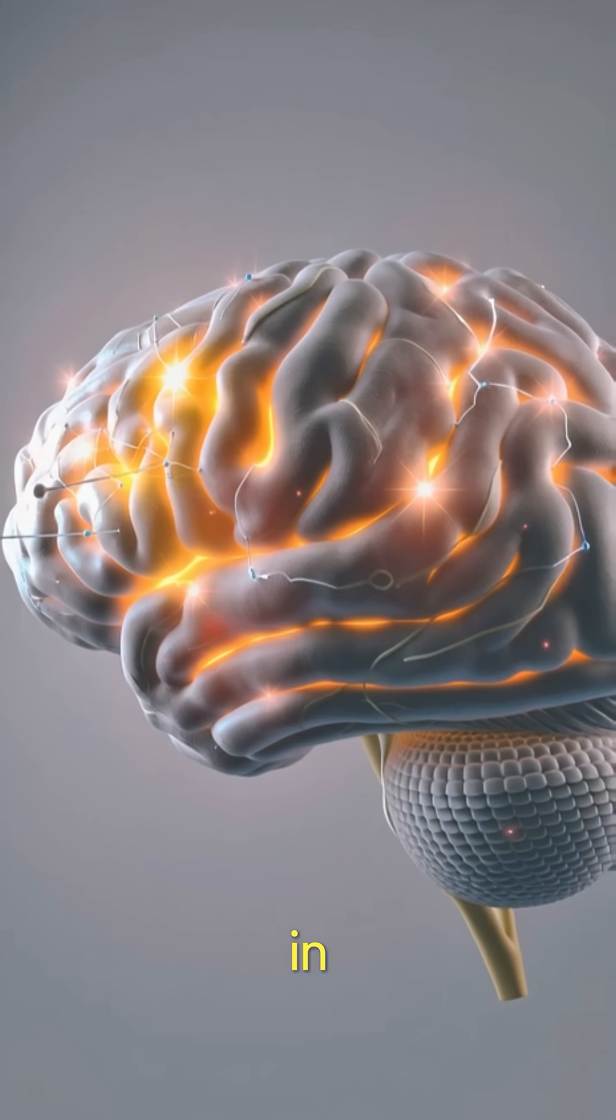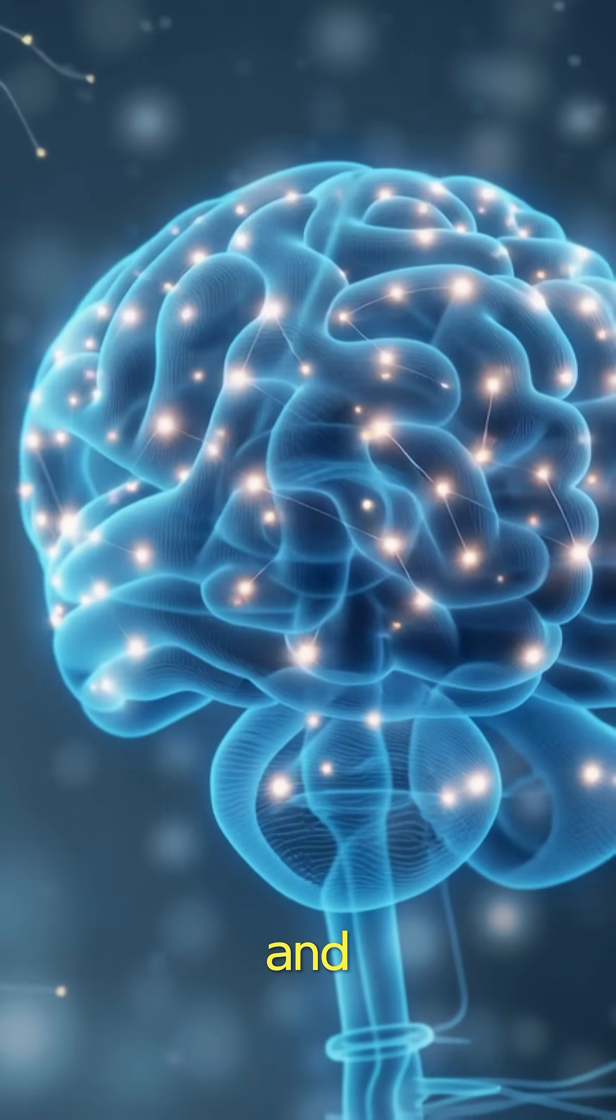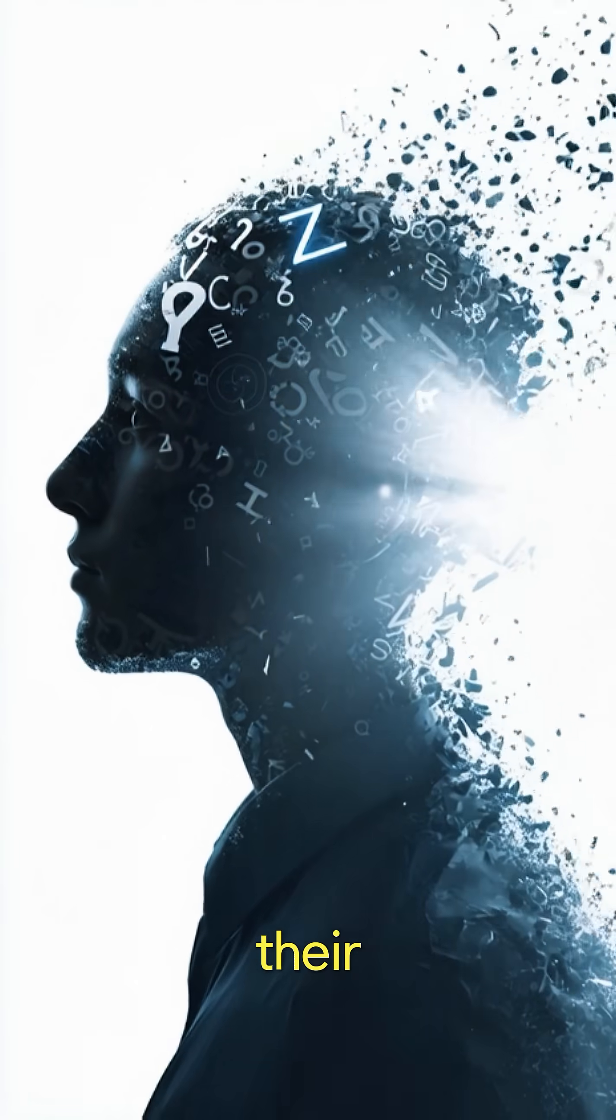They also show higher activity in the anterior cingulate cortex, the region that detects errors and updates beliefs. That's why truly intelligent people change their minds often.